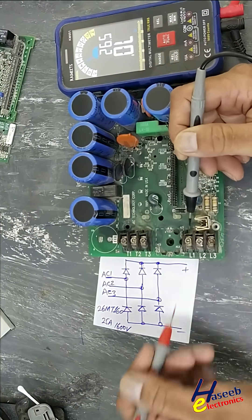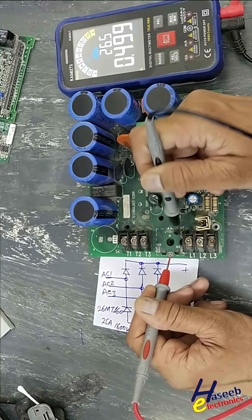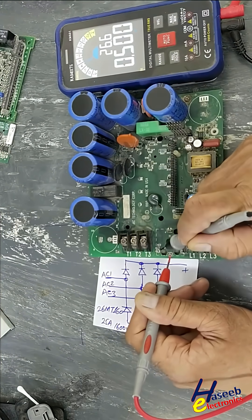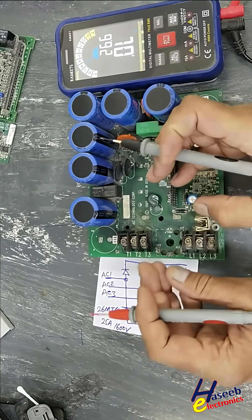Reverse the leads. Red lead at the negative terminal. Check one AC terminal—one diode shows forward bias. Forward bias. Forward bias. So this bridge rectifier is good.